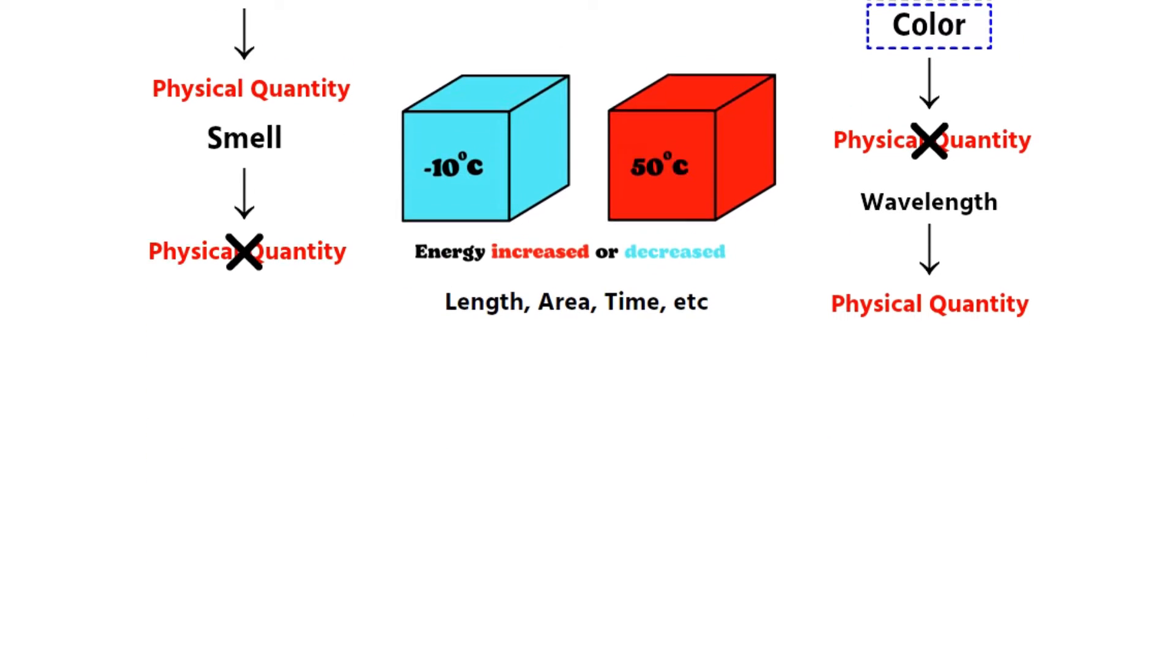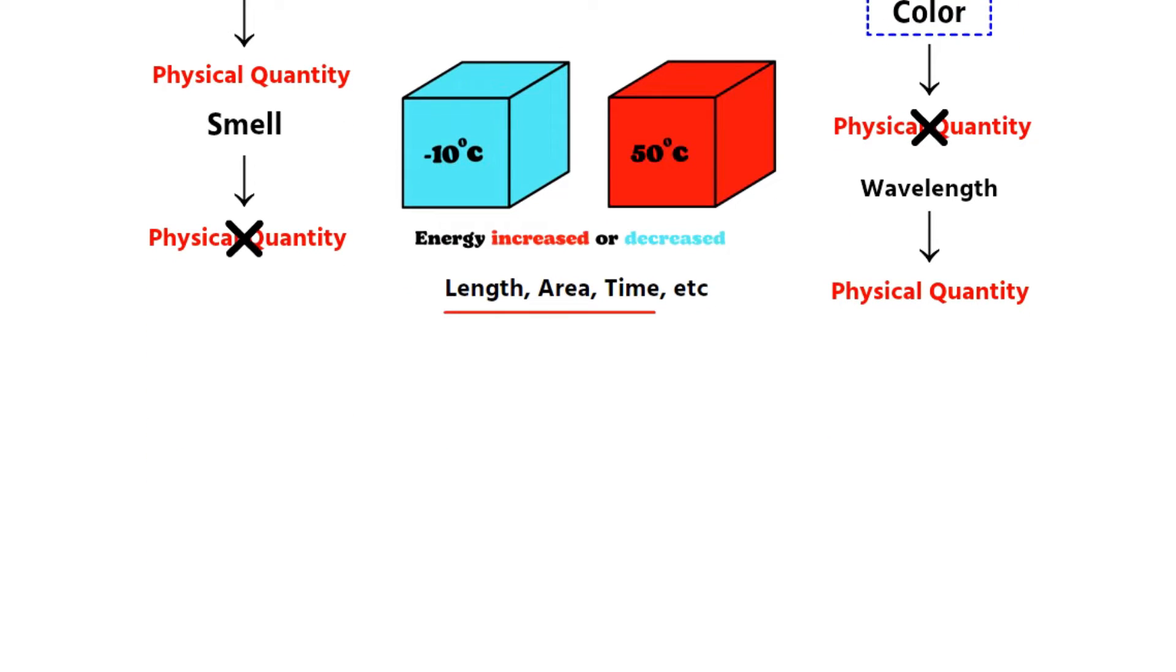In physics, one of the most important tasks is to measure these physical quantities, as accurately and precisely as possible. Until a physical quantity is measured, or expressed by means of a number and unit, the observation does not complete. So in this tutorial, we are going to learn about the scientific ways of measuring these physical quantities.